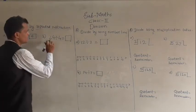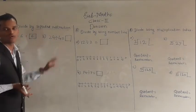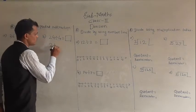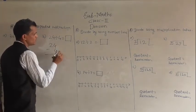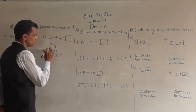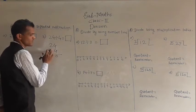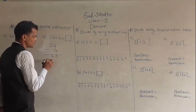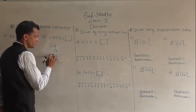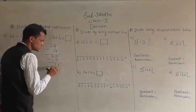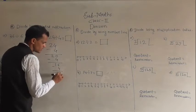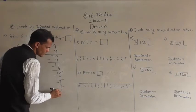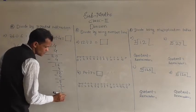Next example: 24 divided by 4. We have to find out the quotient. Write 24 and every time subtract 4. 24 minus 4 is 20, 20 minus 4 is 16, 16 minus 4 is 12, 12 minus 4 is 8, 8 minus 4 is 4, and 4 minus 4 is 0.